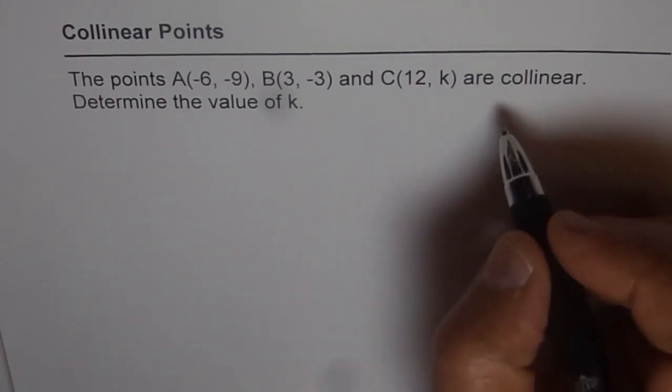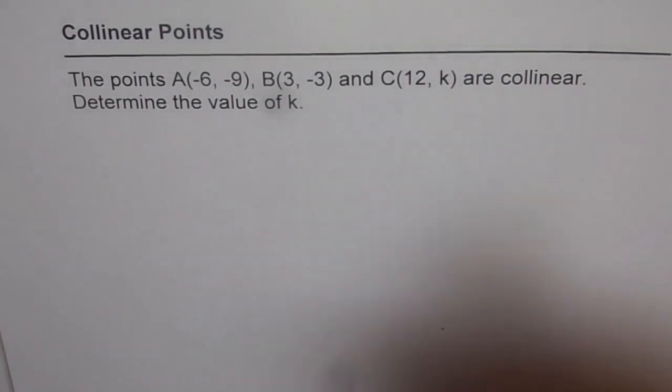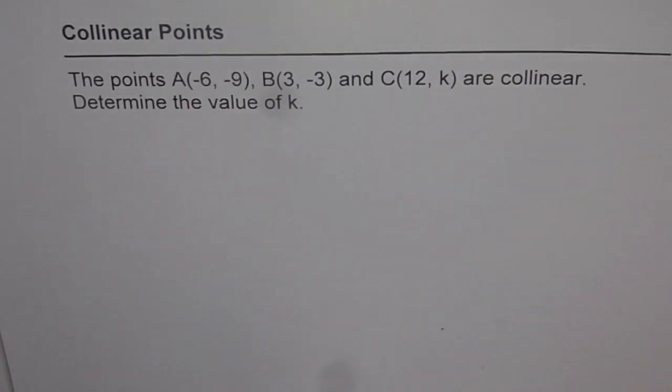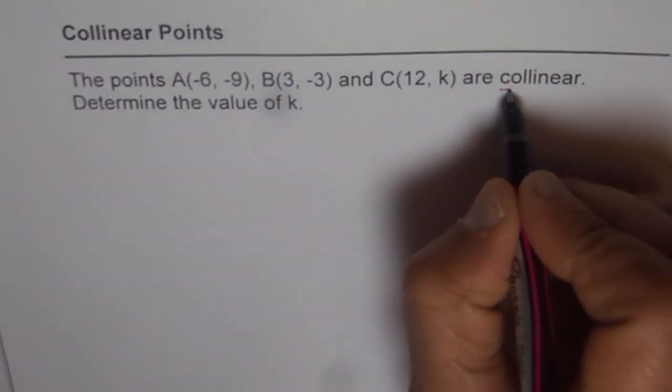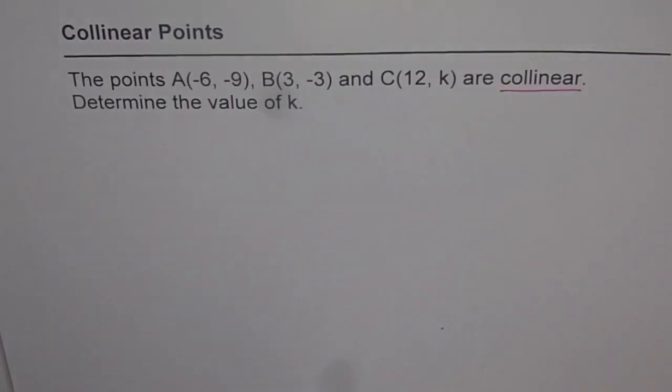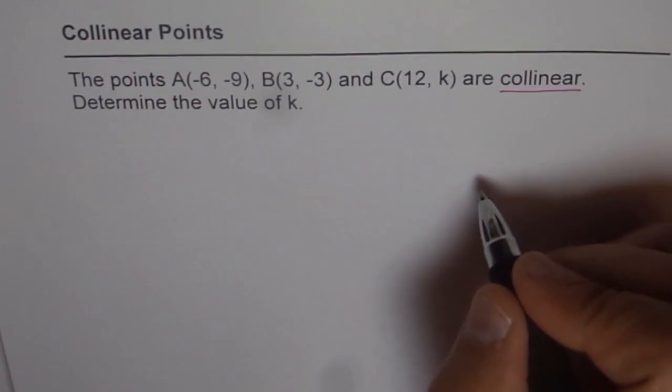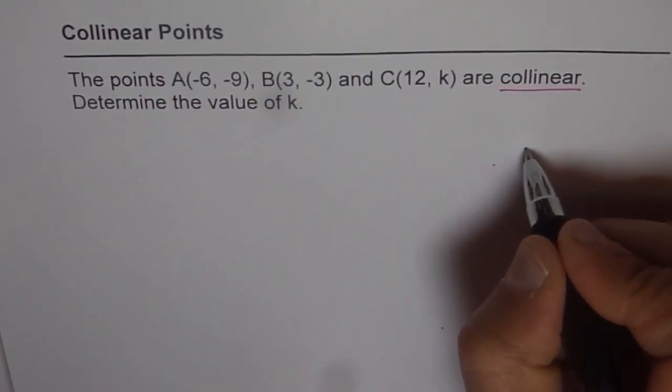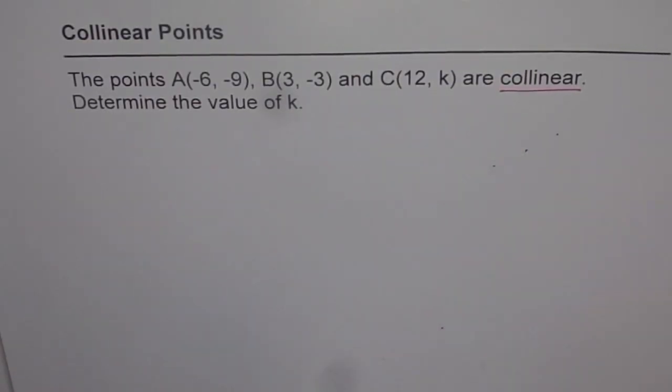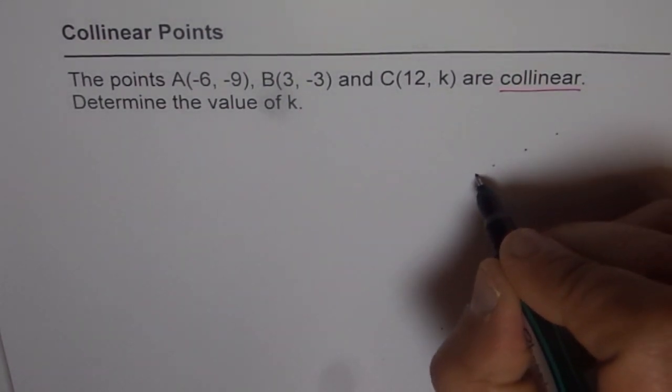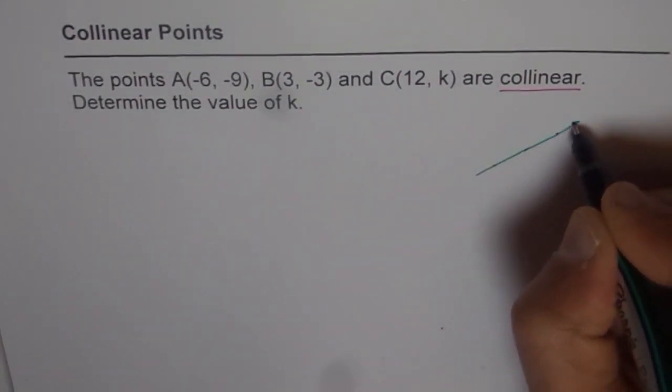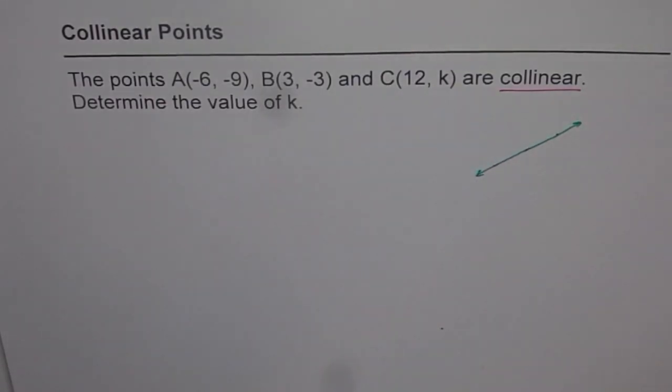When we say collinear, what does that mean? That is the first thing you should know. Collinear means falling in the same line. Three points which are on the same line - if I draw a line, I can connect all three points with a straight line. That is the meaning of collinear.